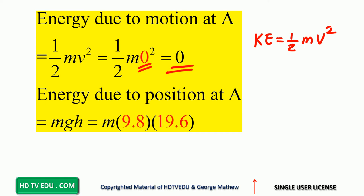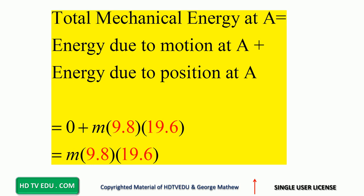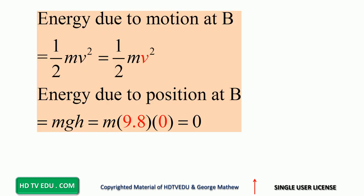Note that h can be positive, zero, or negative. Point A is above point B, so h is positive at 19.6 meters. The energy due to position at point A is mgh — mass times acceleration due to gravity (9.8 m/s²) times height 19.6. So total mechanical energy at A equals zero plus m × 9.8 × 19.6.